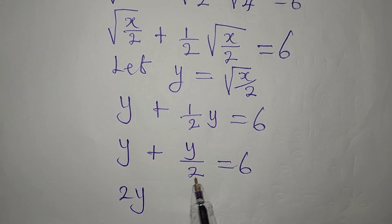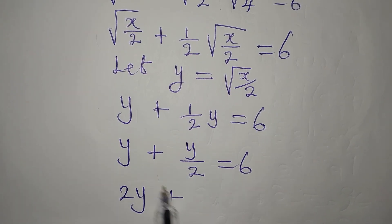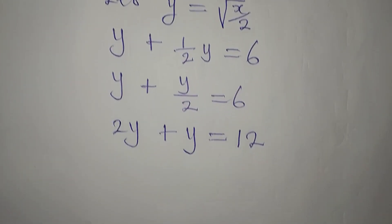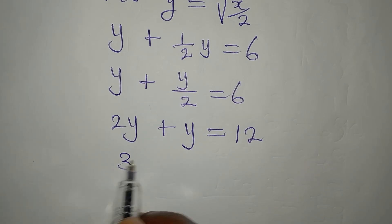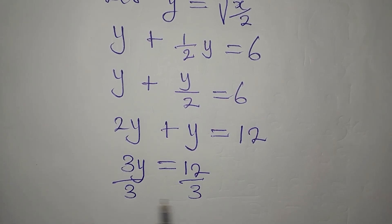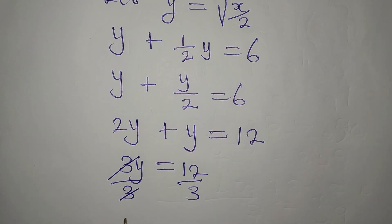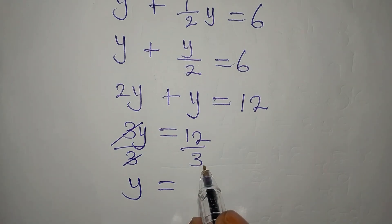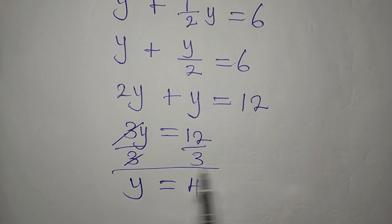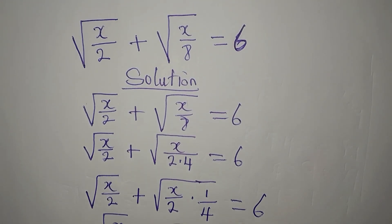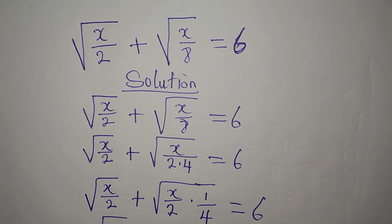Then we multiply all through by the LCM which is 2, so 2y plus y equals 2 times 6, that is 12. We add these to get 3y equals 12, then divide both sides by 3, and our y will be equal to 4. But mind you, in the original equation we do not have y, so we need to go back and find x.